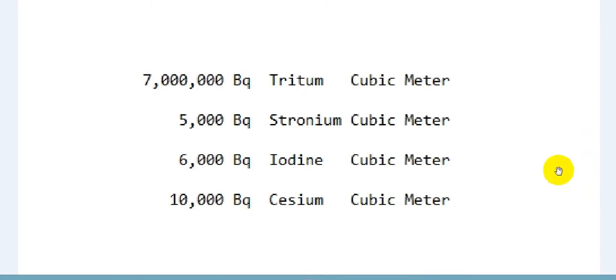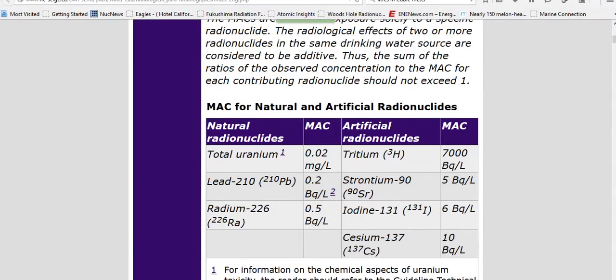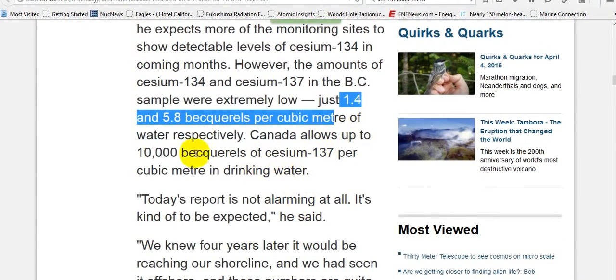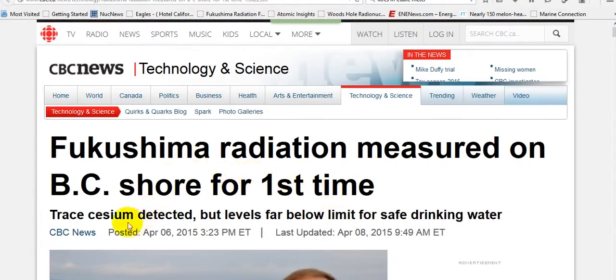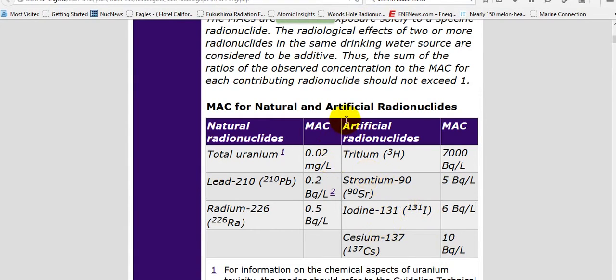Whoever did this, whoever said okay we're going to do this, needs to be dealt with publicly in our media. How can we trust them? Because CBC never bothered asking the question of why. They say Canada allows up to 10,000 becquerels of cesium-137 per cubic meter in drinking water, and they're right. Trace cesium detectable levels far below limits for safe drinking water, because someone jacked our drinking limits and included artificial radionuclides.